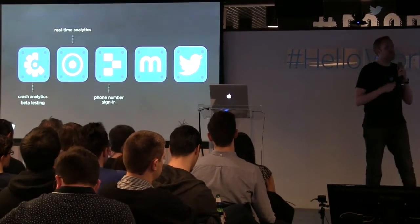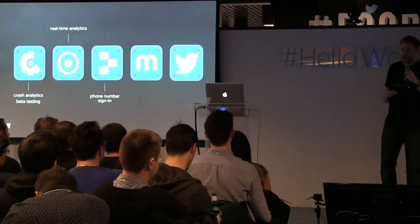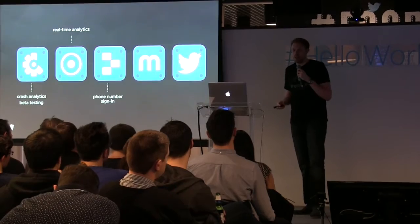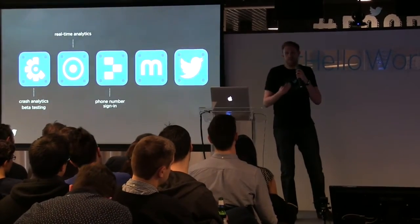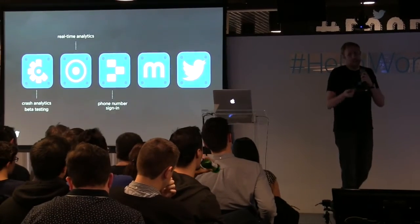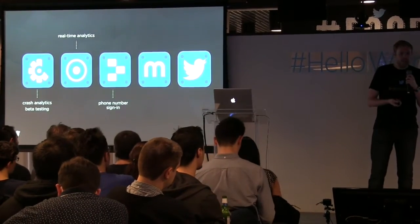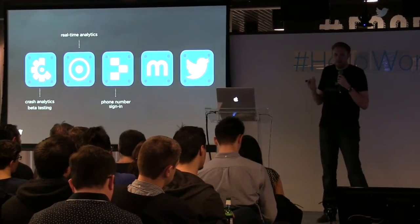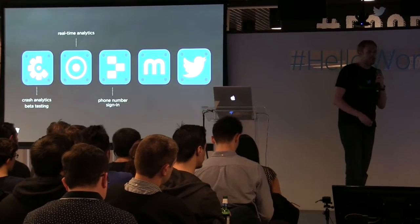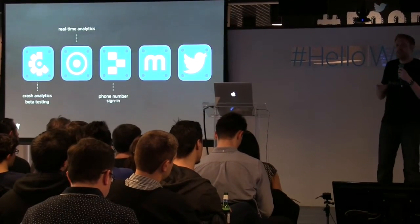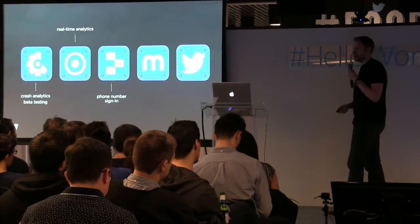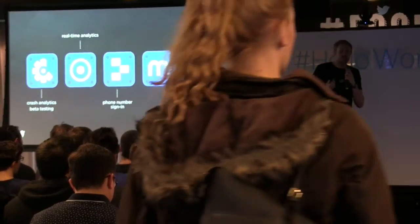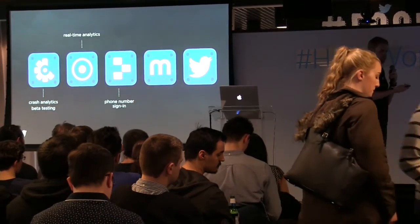We then have Digits, which is our solution around phone number sign-in. Increasingly, especially in developing regions, the first device people use when they come onto the internet is not a laptop — it's a phone. Therefore, the first piece of identity they have online is not an email address, it's a phone number. The phone number is a better source of identity — I personally have four or five email addresses, some I don't check, but I have one phone number and it lives with me. So we want to enable you to use the phone number as the primary identity source in your app, and we've enabled this using Digits.